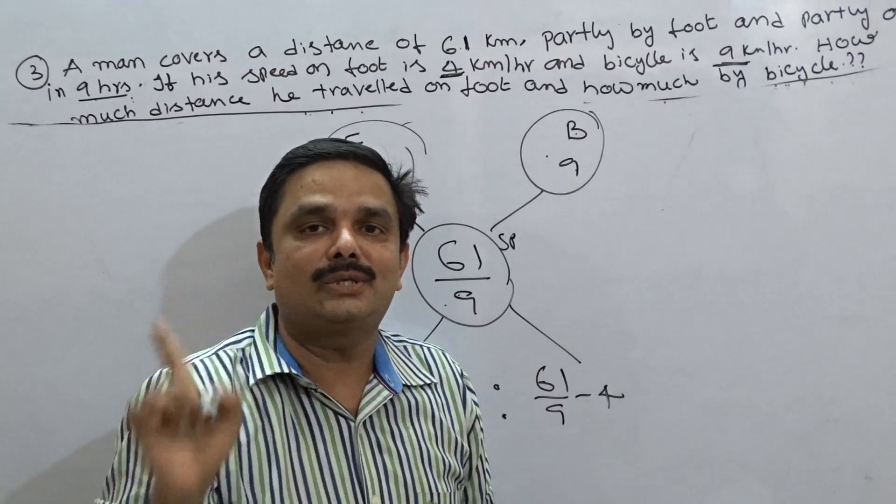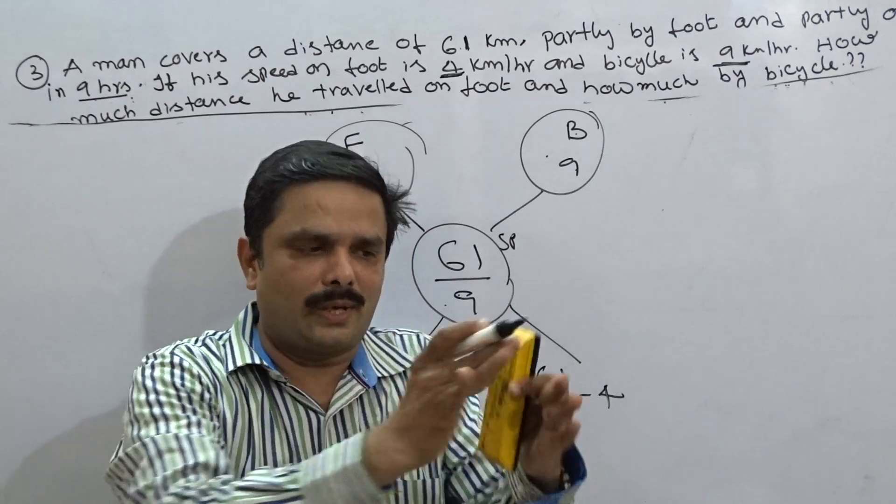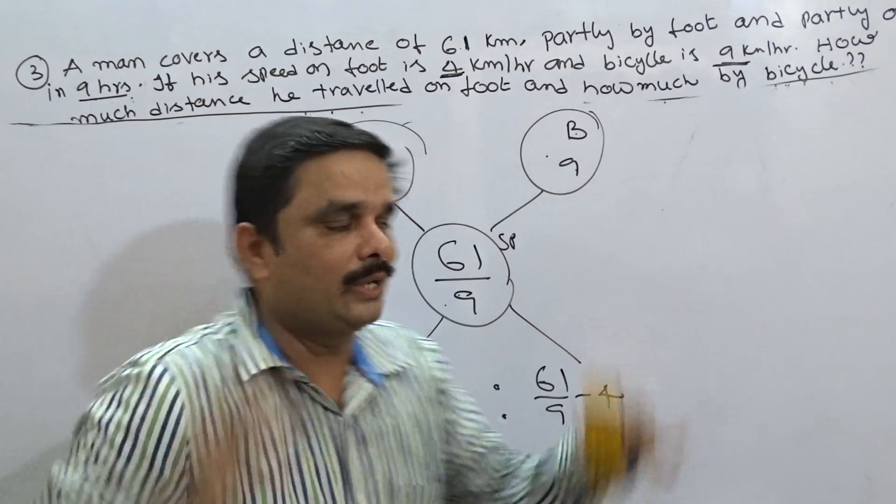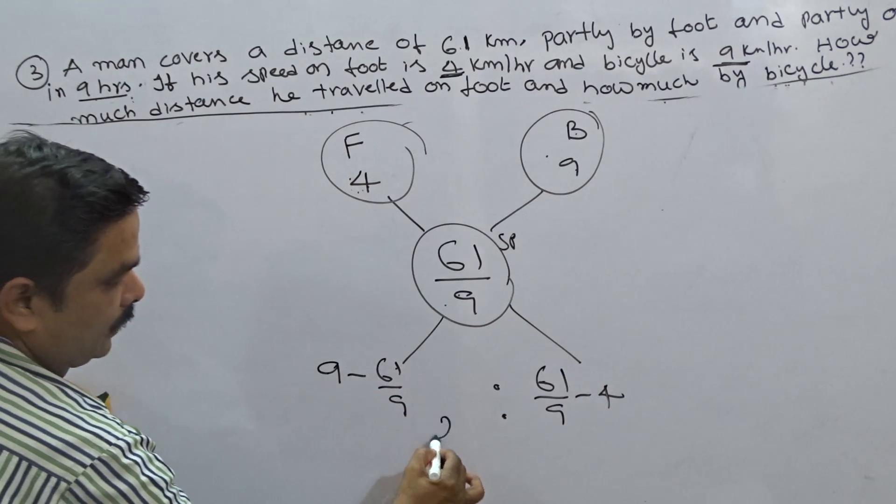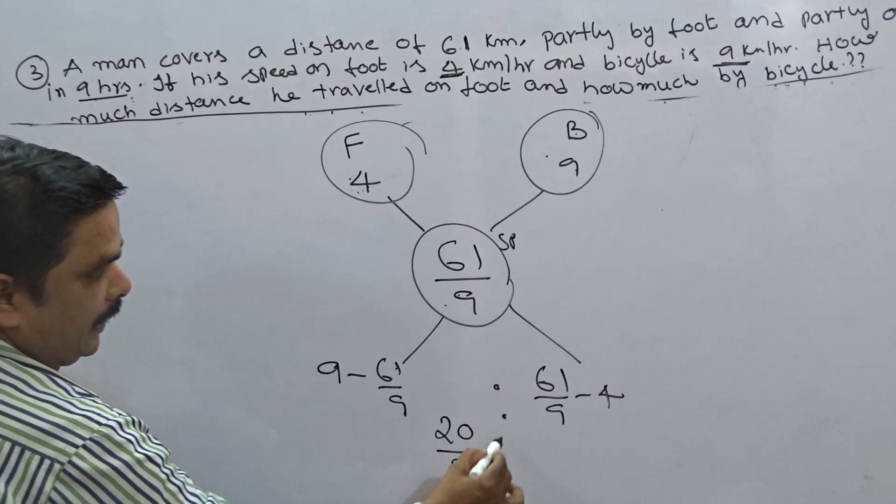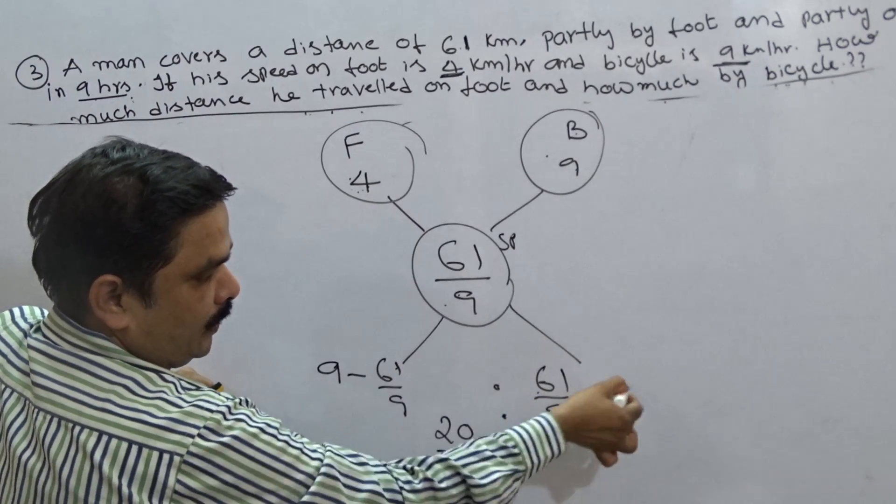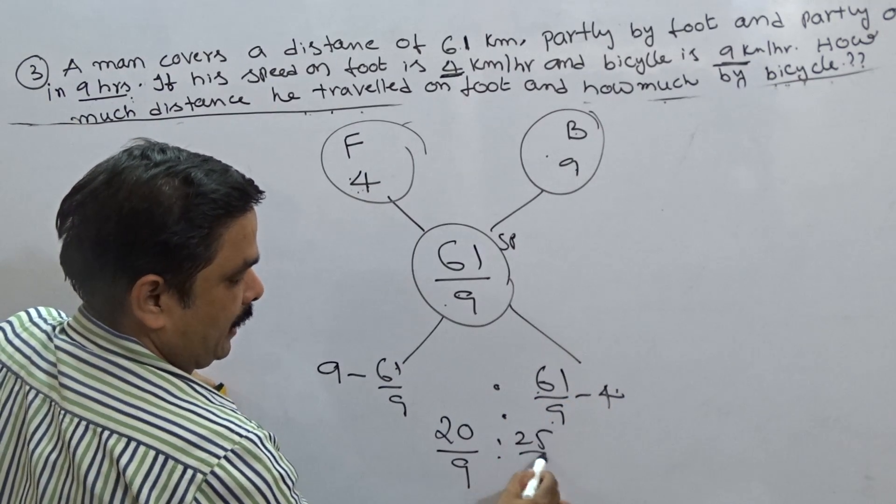If anybody has any doubt still, you can refer mixture and allegation video 1, so that you can understand the basics very, very clearly. Now, here, the ratio is, this is 81 minus 61, 20 by 9. And it should be 36. 61 minus 36 is 25 by 9.